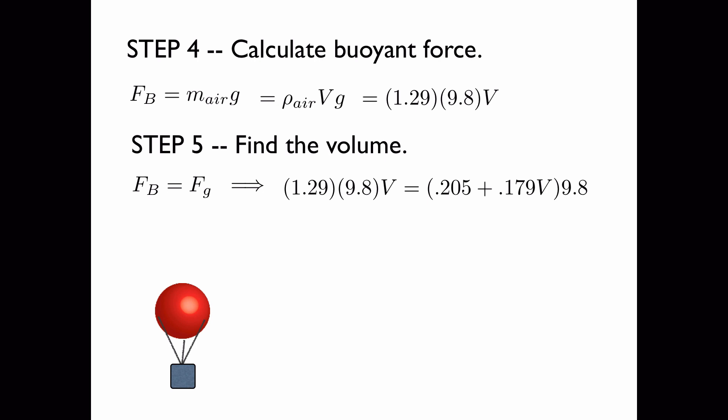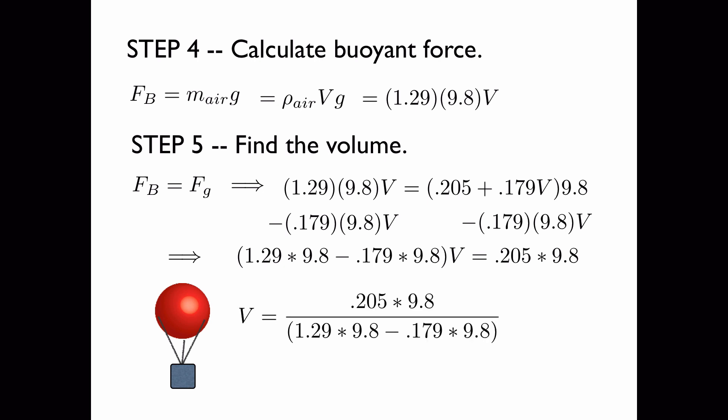Now we need to solve for V, so we're going to group all the terms with a V in them together. We do this by subtracting the term from both sides that has a V. And this implies this expression, where we have all the V's together on the left-hand side. Now we can divide both sides by the term on the left that is multiplied by the V, and we get this expression.